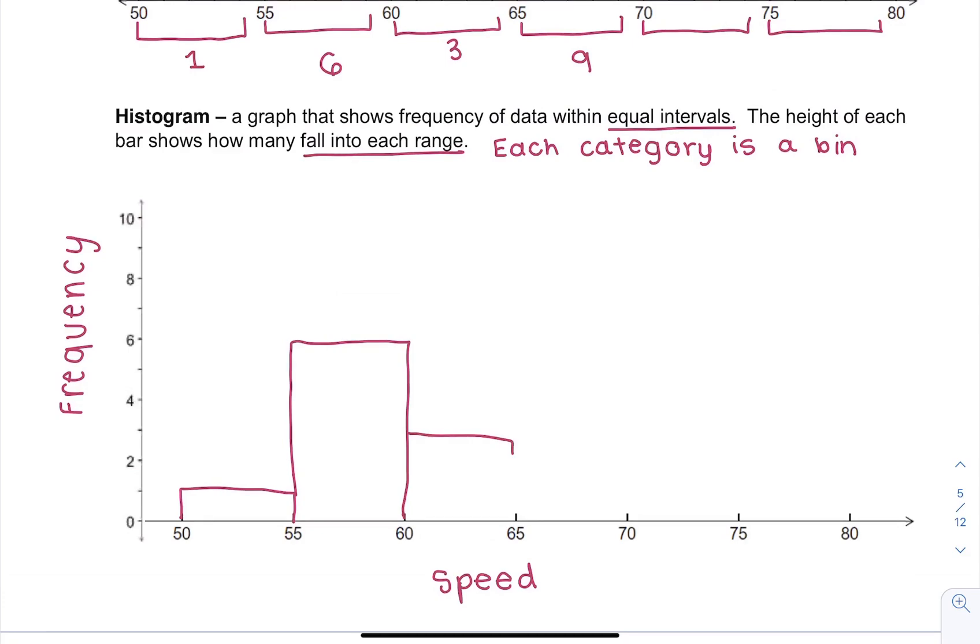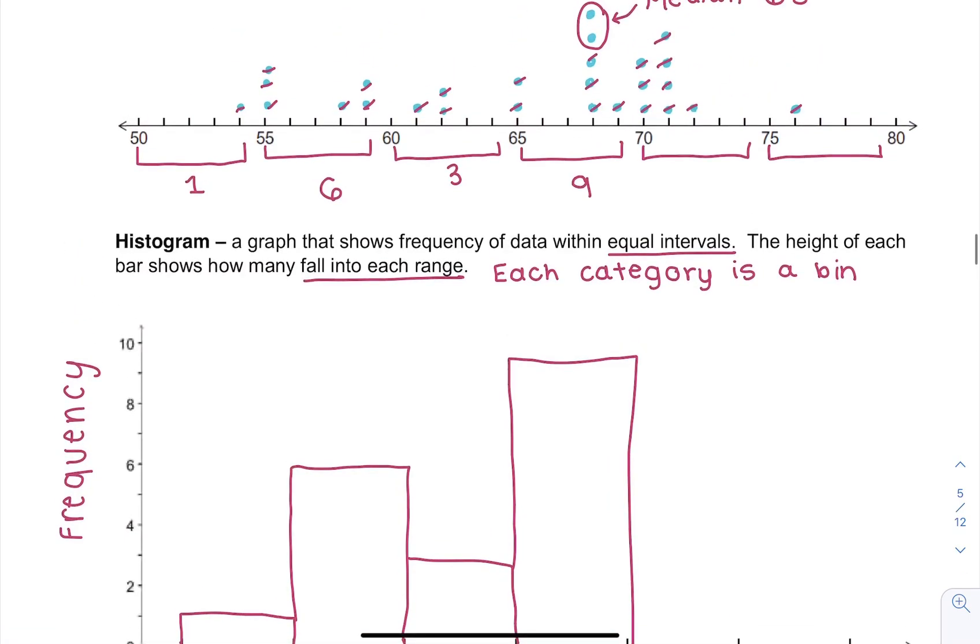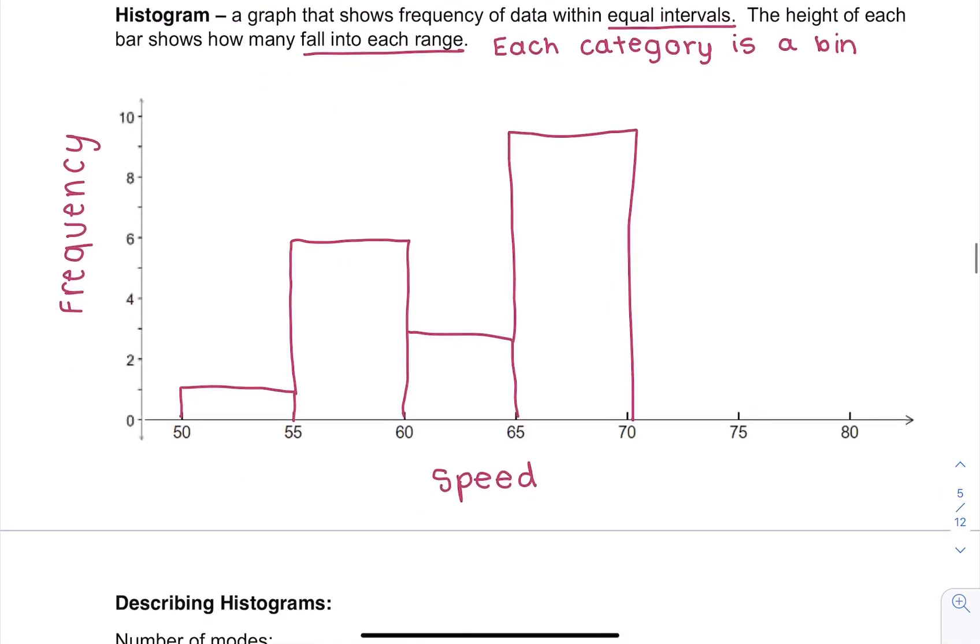Then from 60—oh did I not, oops, sorry guys—so this one is three and then we have nine. You have some technical difficulties here. There we go. Then from 70 to 75 I have eight, and the last one I just have one.